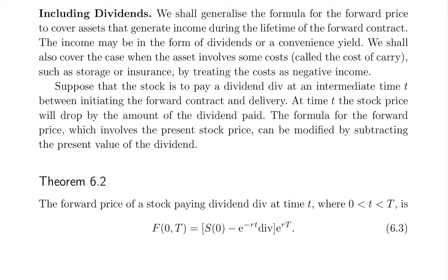At time t, the stock price will drop by the amount of dividend paid. The formula for the forward price, which involves the present stock price, can be modified by subtracting the present value of the dividend. Theorem 6.2: The forward price of a stock paying dividend div at time t, where t is between 0 and T, is F(0,T) = (S0 − e^(−rt) · div) · e^(rT).